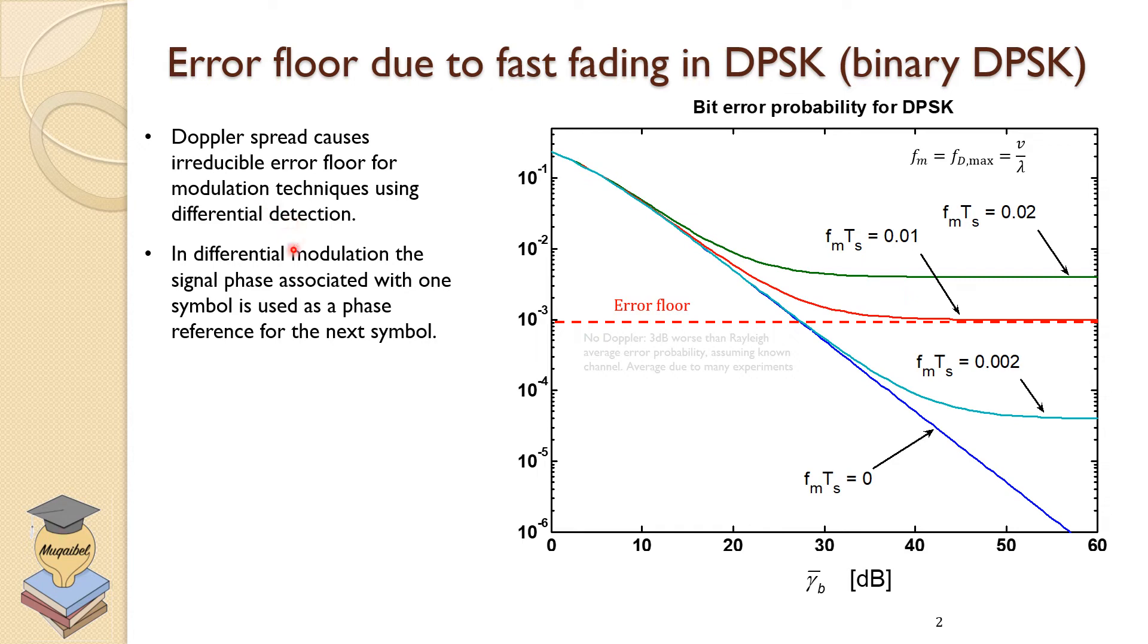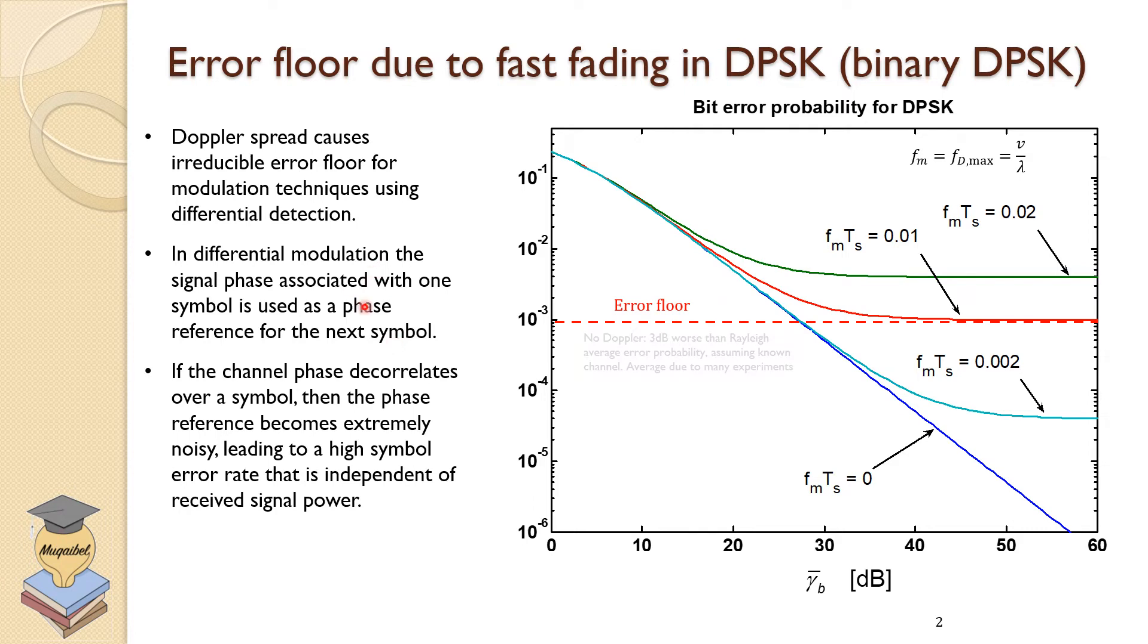Because differential is now not good anymore. The difference, because things are changing. In differential modulation, the signal phase associated with one symbol is used as a phase reference for the next symbol, as we have done in the previous slide. In the channel, if the phase of the channel decorrelates, changes over symbol, then the phase reference becomes extremely noisy. And that would lead to very high symbol error rate that is independent of the signal power. Even if you increase the signal power, because we get the signal correct, we're using it to decode the next signal. But the next signal, the channel has changed dramatically. So that explains why we have error floor.